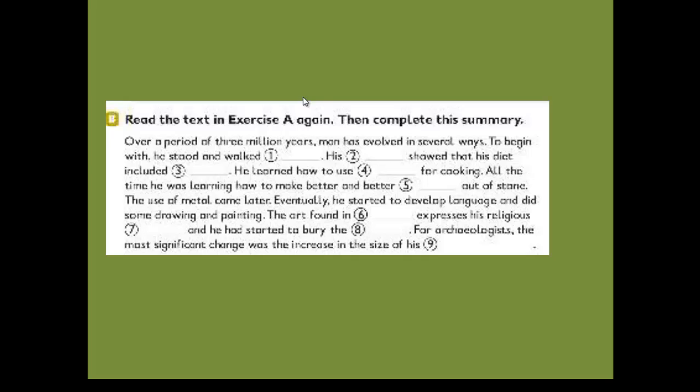Now I will read this again. Over a period of three million years, man has evolved in several ways. To begin with he stood and walked upright. His teeth showed that his diet included meat. He learned how to use fire for cooking. All the time he was learning how to make better and better tools out of stone. The use of metal came later. Eventually he started to develop language and did some drawing and paintings. The art found in caves expresses his religious beliefs, and he had started to bury the dead. For archaeologists, the most significant change was the increase in the size of his brain.